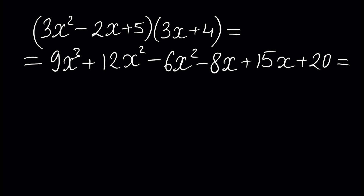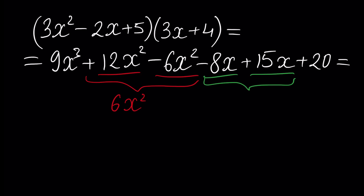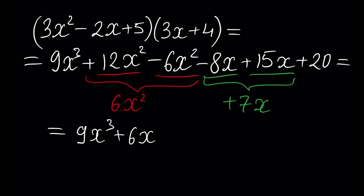Next we observe that 12x squared and minus 6x squared are similar monomials, so we can add and subtract them: 12 minus 6 equals 6x squared. And minus 8x plus 15x gives plus 7x. So if we rewrite, the result is 9x cubed plus 6x squared plus 7x, and plus 12 plus 20 — which is plus 20.